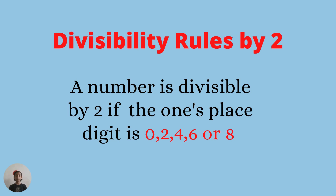Divisibility rule of two: a number is divisible by two if the ones place digit is zero, two, four, six, or eight. Example: one thousand two hundred and twenty-two is divisible by two because the digit in its ones place is two.